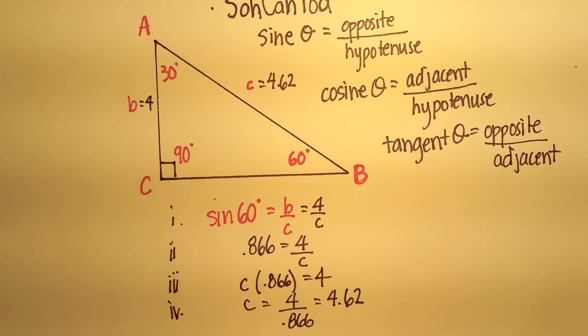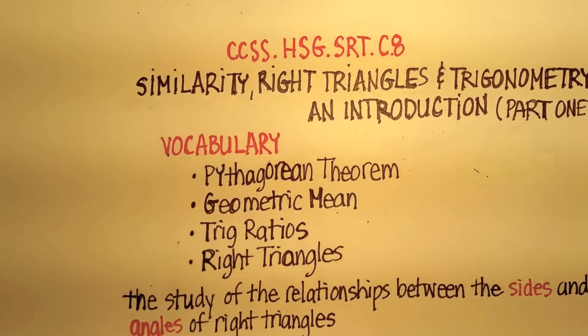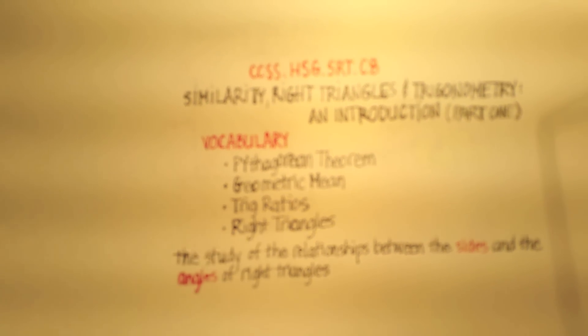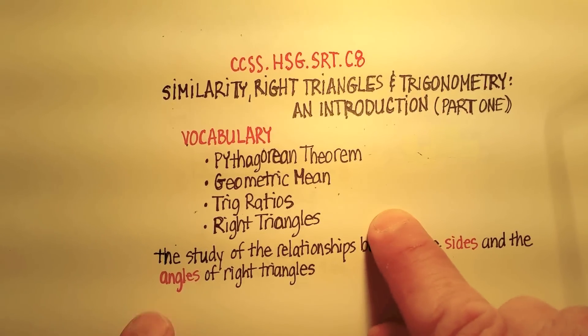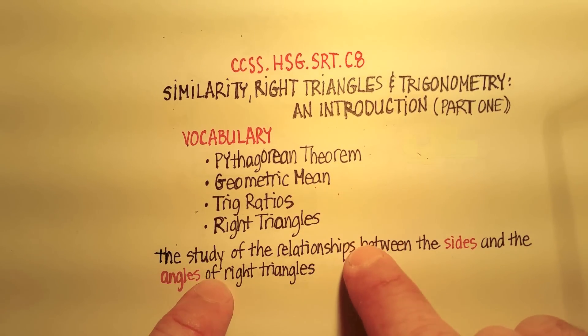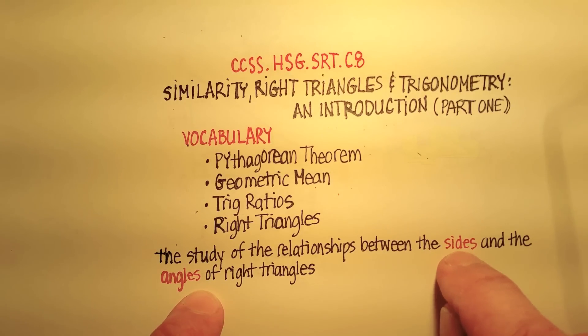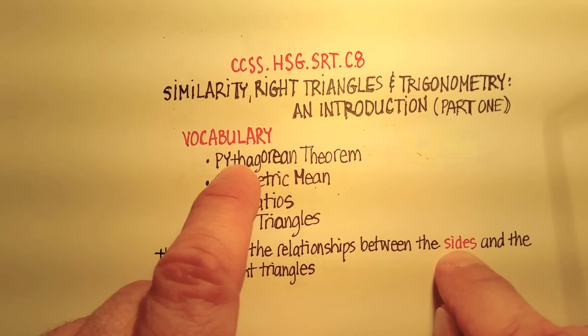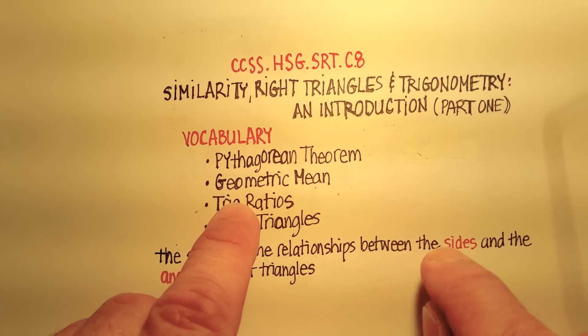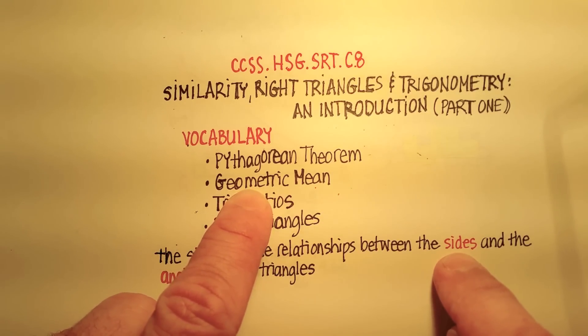Now that was quite a bit of information. Basically, just remember that the idea behind this whole video is that there are relationships that exist between the sides of right triangles and the angles of right triangles. And you can find the sides of right triangles by using the Pythagorean theorem with certain pieces of information.